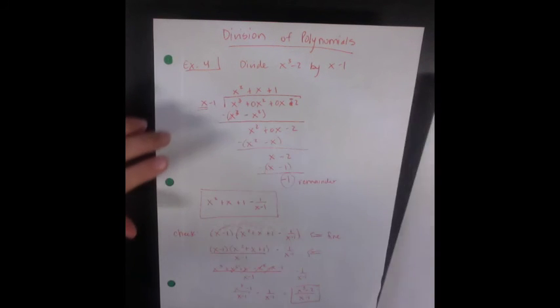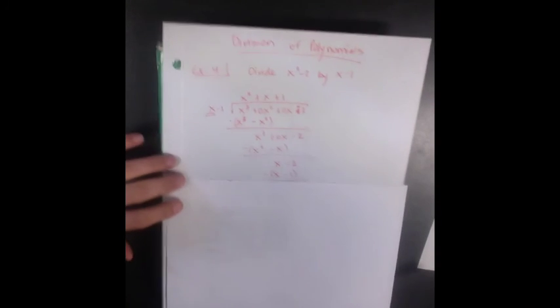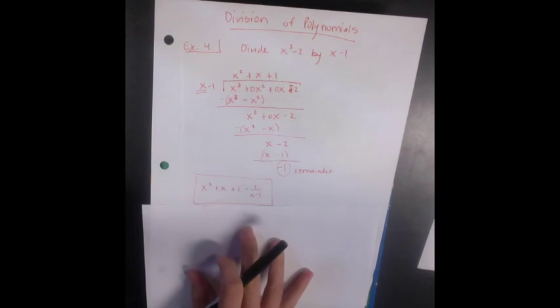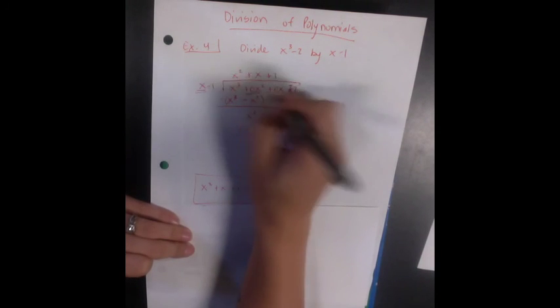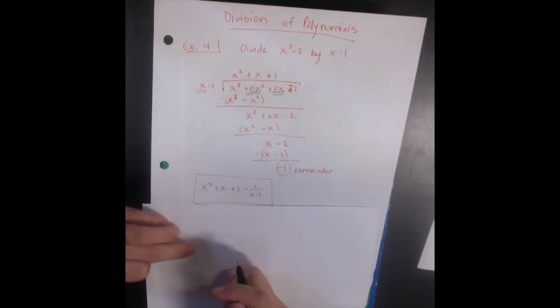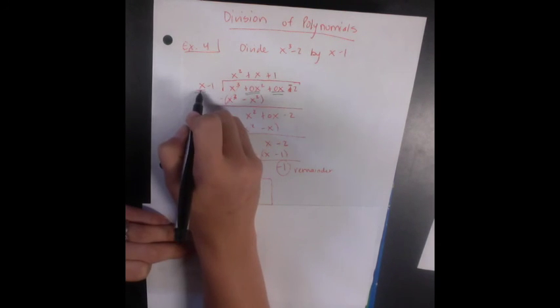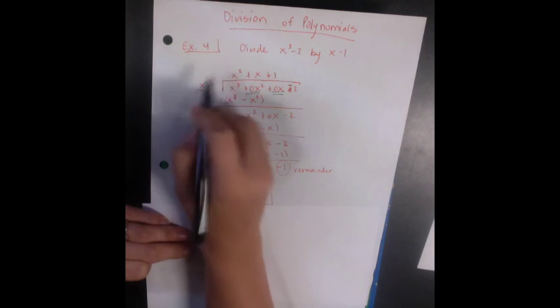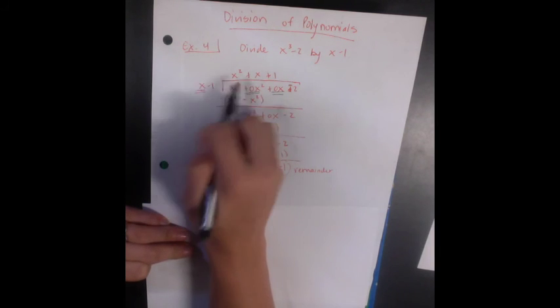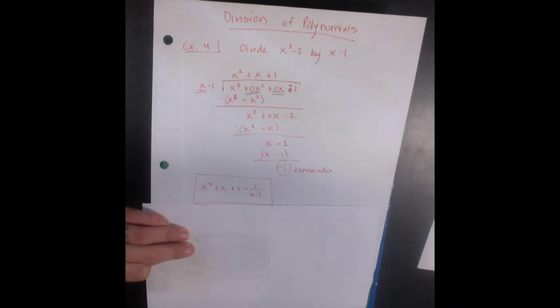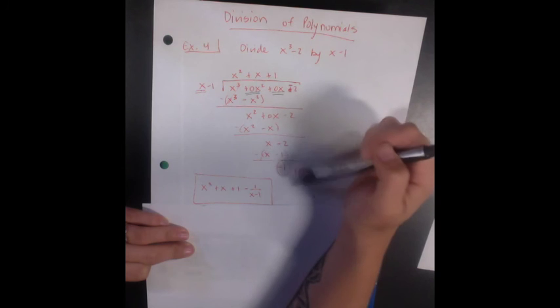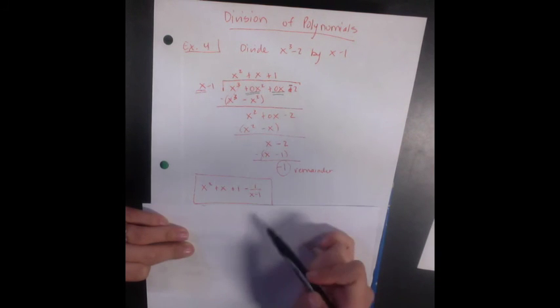We're going to divide x cubed minus 2 by x minus 1. I want us to look at this process. The important thing is you have your placeholders. And when I'm concerned about how do I go from x to x cubed, I multiply by x squared. So multiply both terms by x squared gives me this, and I repeat the process again and again to get my remainder of negative 1.